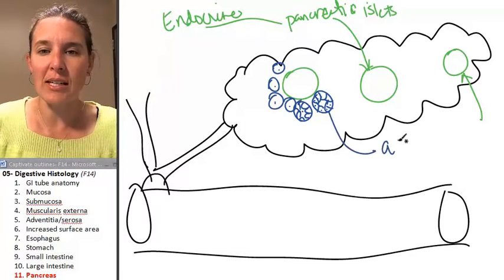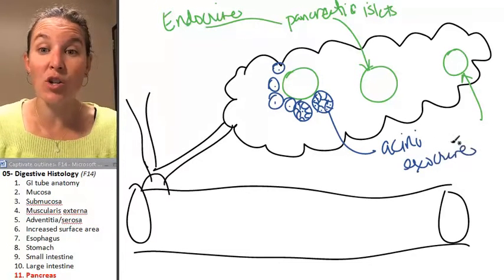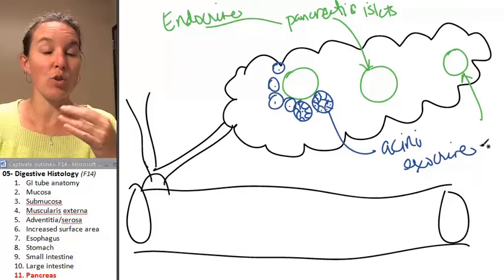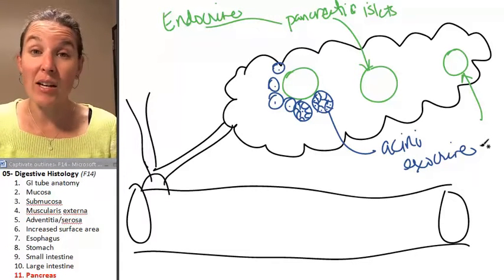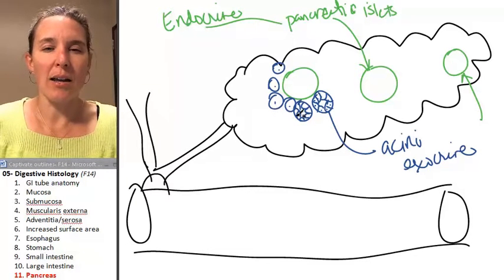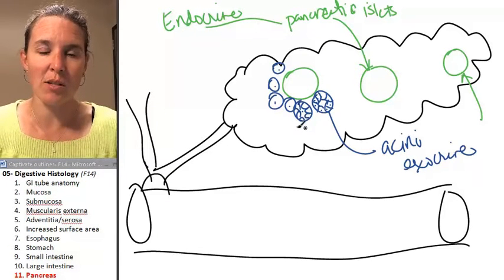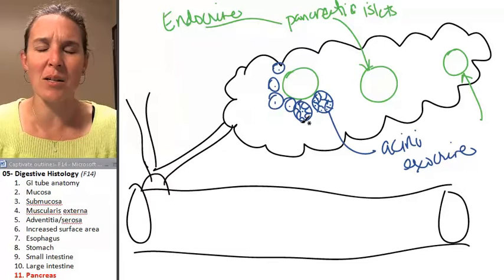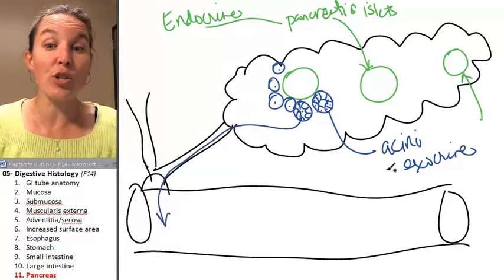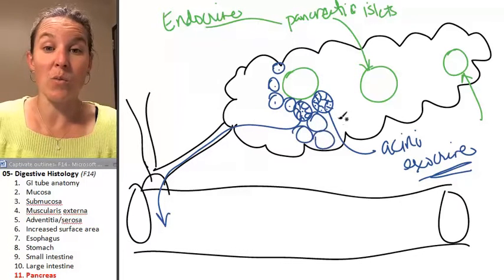These guys are called acini and they're producing the exocrine secretions which are bicarbonate ions to neutralize the stomach acid, digestive enzymes to help digest proteins and carbohydrates. And I don't know, do they make fat digesters, fat enzymes too? I don't think so. I think the bile emulsifies the fat and then we just absorb it directly. So all of this stuff, produced by the exocrine structures, the acini, is dumped into the duodenum.